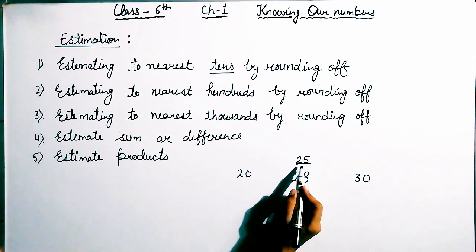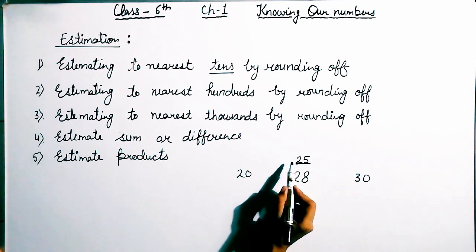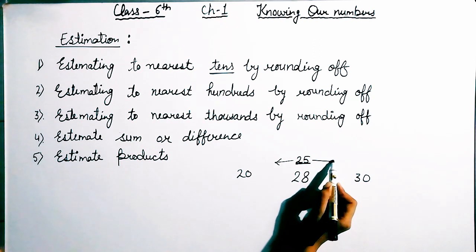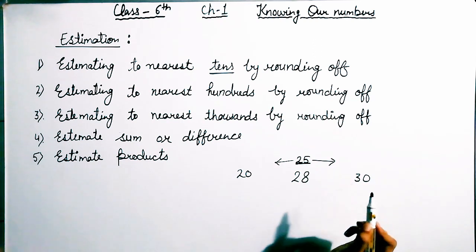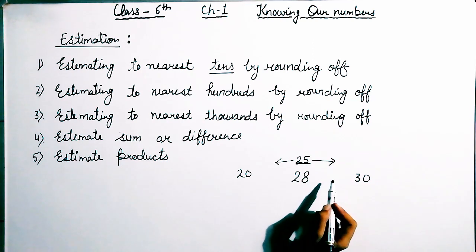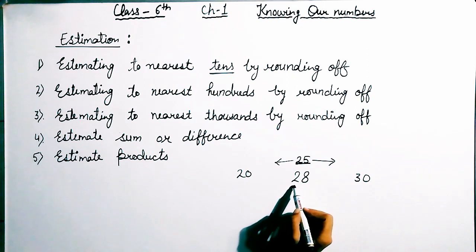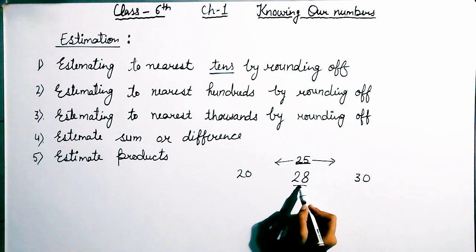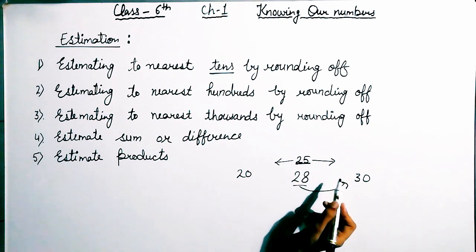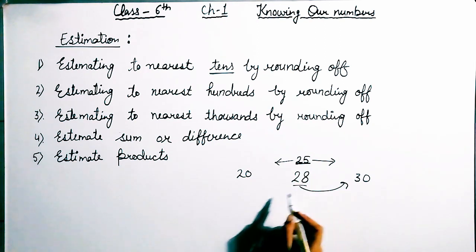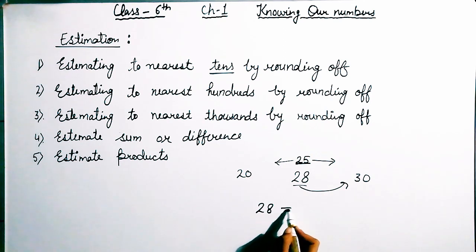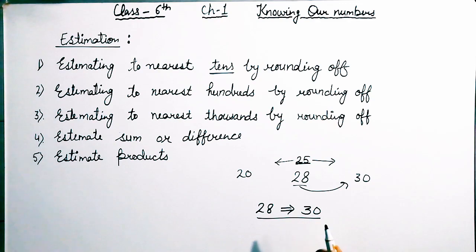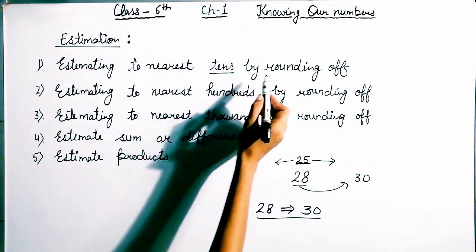If your number is less than 25, then we will move towards 20. And if the number is greater than 25, then we will move towards 30. So the given number is 28. Since 28 is greater than 25, it is nearer to 30. So this is the estimation to the nearest ten by rounding off.